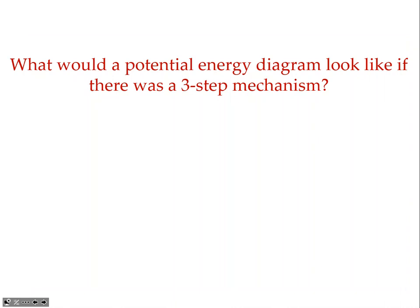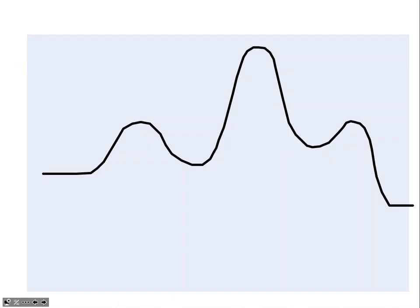We stopped here and didn't get through it entirely, so I'm going to go back over it. What would a potential energy diagram look like for a three-step mechanism? Each step in the mechanism has its own rate law and its own activation energy. It's going to have three hills — a three-step mechanism will have three hills in it.